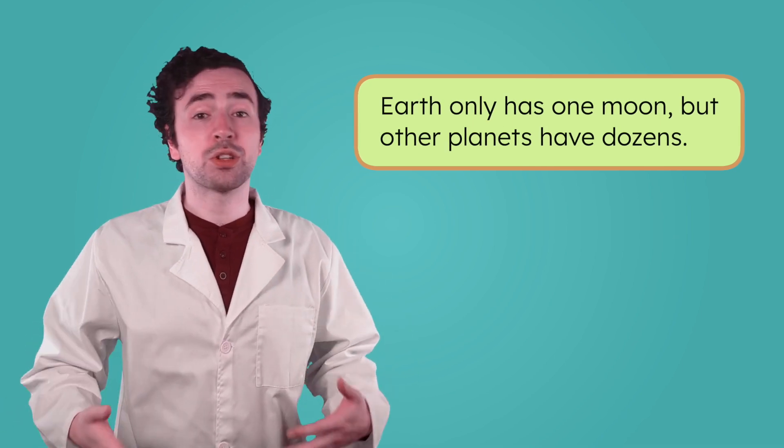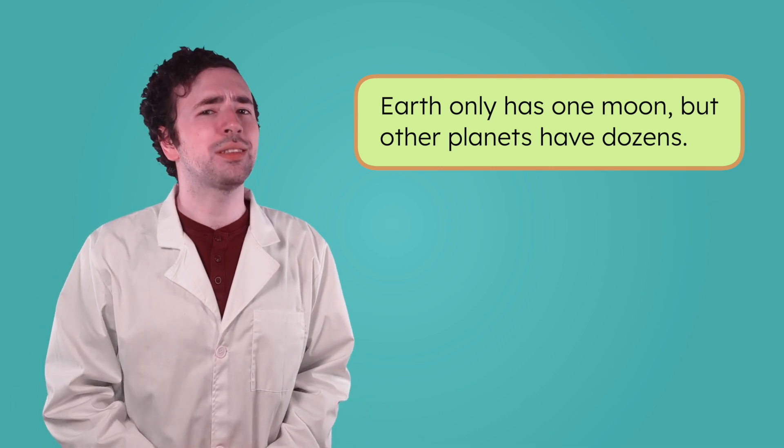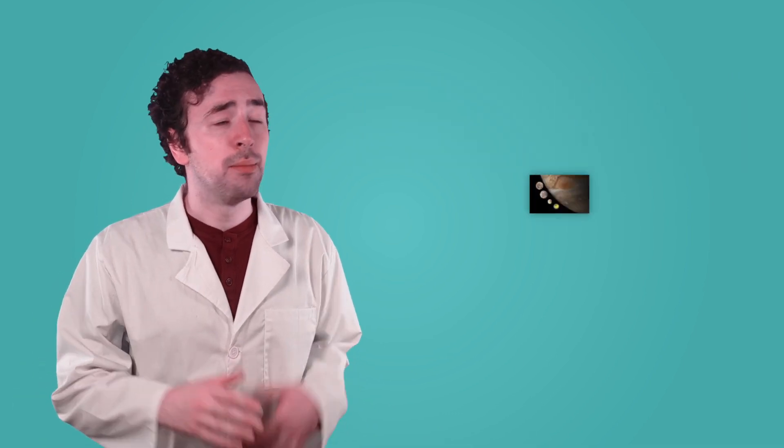Our moon isn't the biggest or the most unusual in the solar system, but it does stand out for a different reason. Most moons are much smaller than the planets they orbit. But Earth's moon is about one-fourth the size of Earth. And since it's so close, we can see a lot of details on its surface with just our eyes. So what causes those dark and light spots we see on the moon?